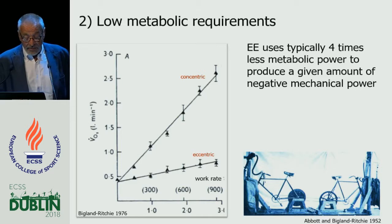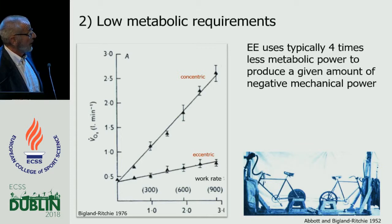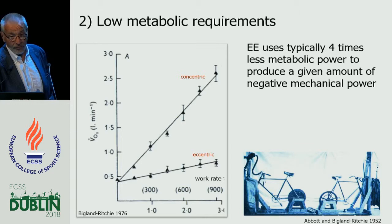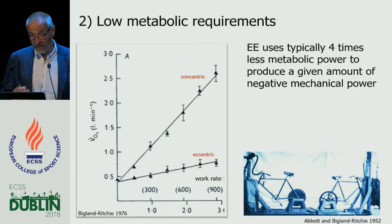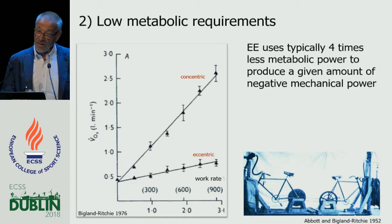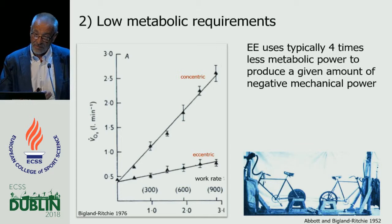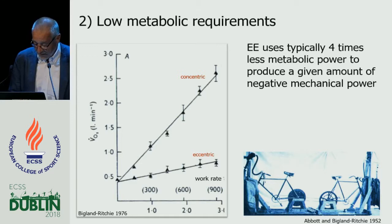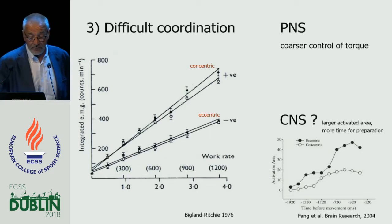Regarding low metabolic requirements, this was shown nicely for the first time by Pickel and Richie in 1952 using two ergometers set up back to back, measuring oxygen consumption with the Douglas Bag system. In general, the energy requirements of eccentric exercise are about one-fourth of the energy requirements of concentric exercise — 25%. If you do eccentric exercise and produce 100 watts of negative power, your oxygen consumption is equivalent to 25 watts of concentric exercise. The difference is approximately fourfold.